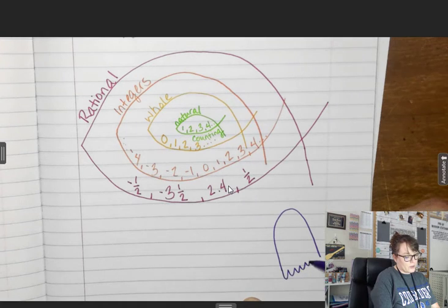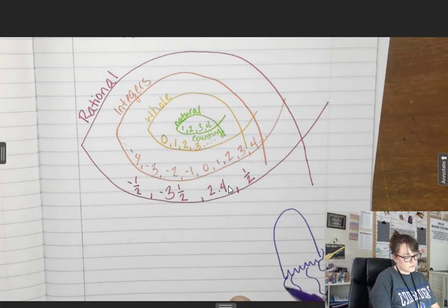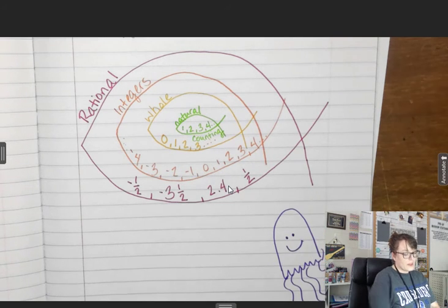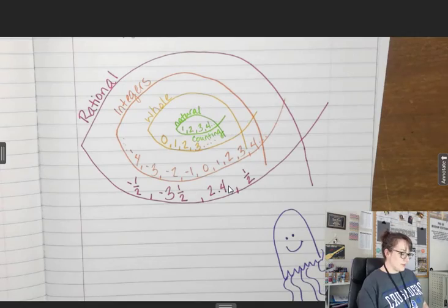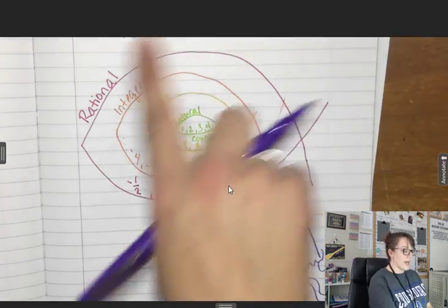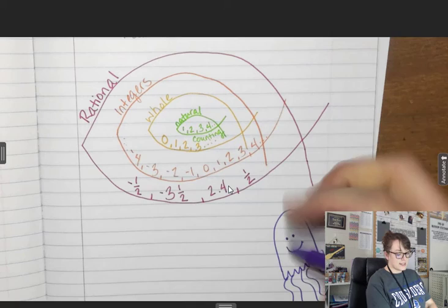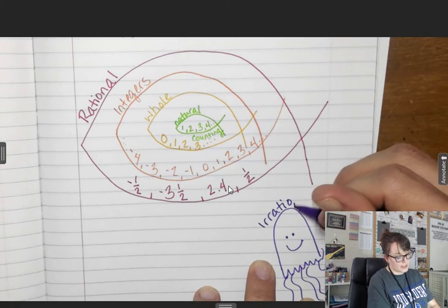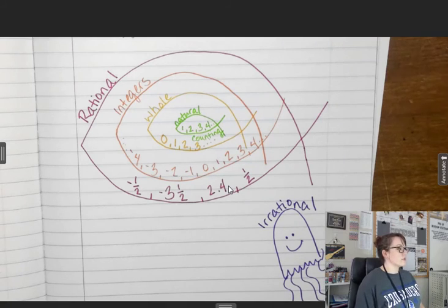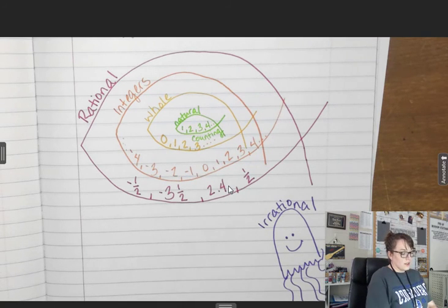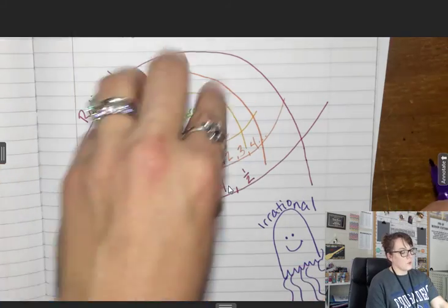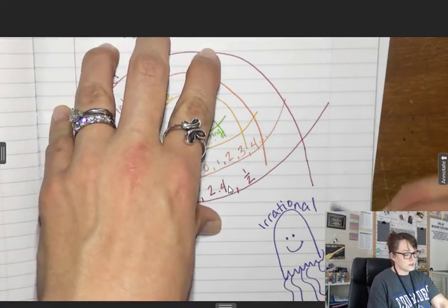Because there is a number that you deal with that is not rational. This is irrational. I like to use a jellyfish for irrational because he doesn't have bones and that seems irrational. There is one number that you know of that is not part of this family, and that's pi.